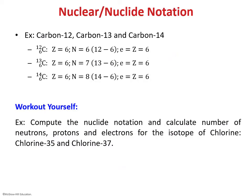Looking at the isotopes of carbon — carbon-12, carbon-13, and carbon-14: carbon-12 has 6 protons, 6 neutrons, and 6 electrons. Carbon-13 has 6 protons but 7 neutrons (13 minus 6), since the atom is neutral. Carbon-14 has 6 protons and 8 neutrons. In all these isotopes, the number of protons stays the same while the number of neutrons differs — that is what an isotope means. Each isotope is referred to as a nuclide.